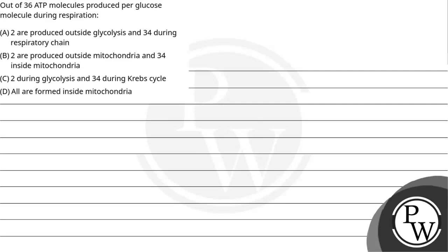Let's see this question. The question says: out of 36 ATP molecules produced per glucose molecule during respiration, option A: two are produced outside glycolysis and 34 during respiratory chain; option B: two are produced outside mitochondria and 34 inside mitochondria; option C: two during glycolysis and four during Krebs cycle; and option D: all are formed inside mitochondria.